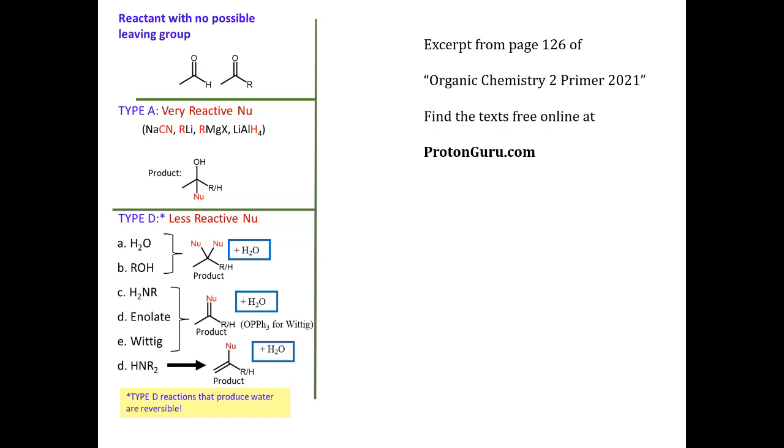I want to take a second and go back to this excerpt from page 126 of the Organic Chemistry II primer that's found on ProtonGuru.com and review what we've already looked at for carbonyl reactions. We learned about these type A reactions where you can take a ketone or aldehyde and do a nucleophilic addition followed by protonation. And we said this happens to some of the more reactive nucleophiles, the carbon or hydrogen-centered nucleophiles.